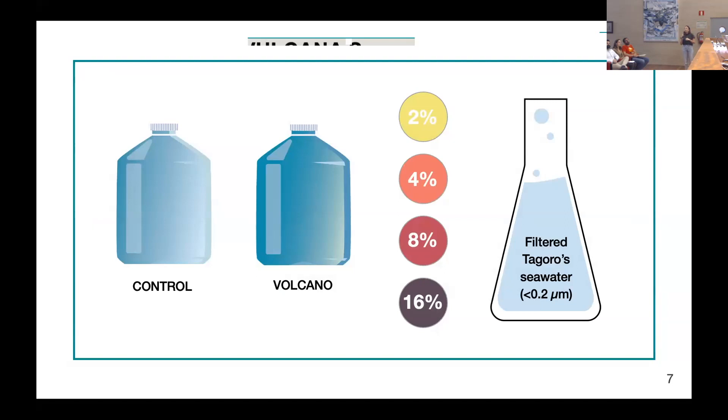The volcano treatments consisted in five liters of the reference seawater mixed with a percentage or proportion ranging from 2% to 16% of filtered seawater from the volcano. It was essential that this treatment water was pre-filtered in order for us to be sure that we were assessing the response of a marine microbial community that wasn't been subject to the volcano before. So our initial community in our experiments will be the one that comes from the reference station. Controls were always run in parallel and consisted in five liters of this reference water mixed with 16%, the maximum proportion that we have in our experiments, of filtered reference water.